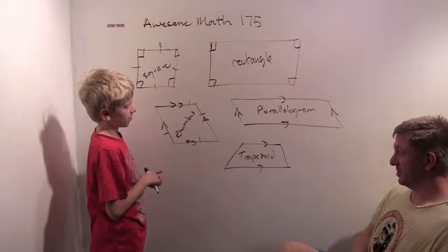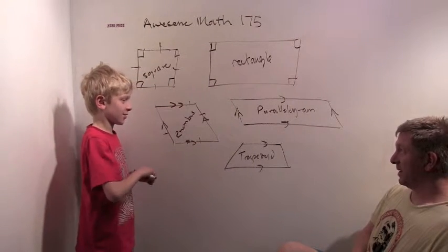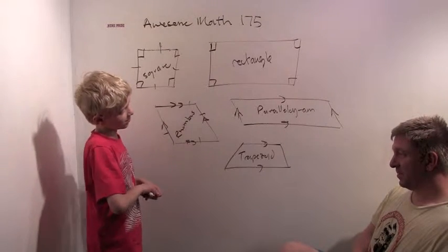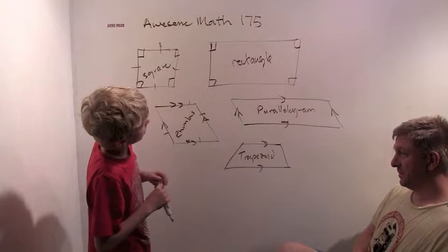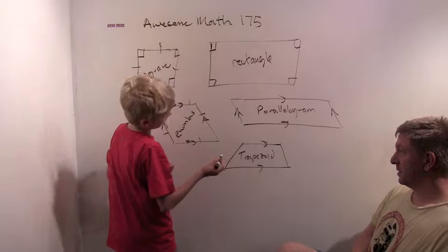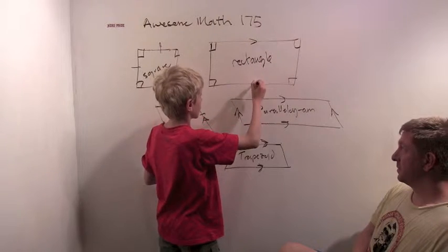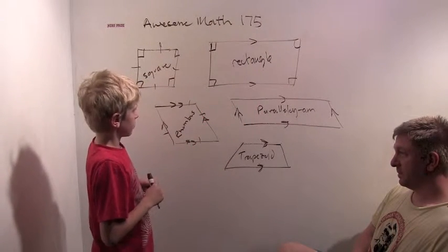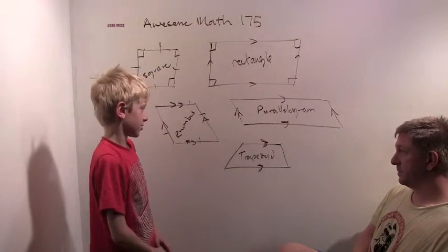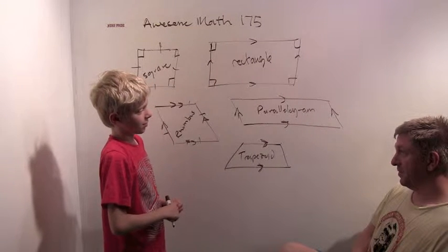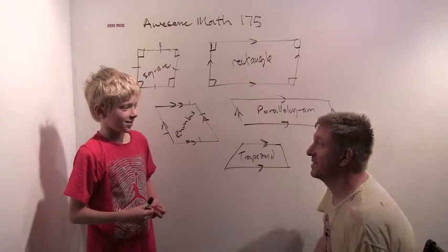Pick two shapes and I'll ask you a question. How about a trapezoid and a rectangle? Is a rectangle always, sometimes, or never a trapezoid? Well, a trapezoid has one parallel line, and so does a rectangle. But a rectangle has two parallel lines, and a trapezoid doesn't, so I think never. Interesting — let's go to the judges. They say try again.